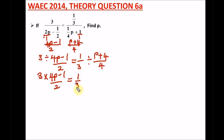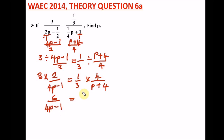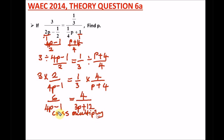We have one over three times - this comes up over 4P minus one, and this would be two. So this would be four over P plus four. What we have is six over 4P minus one, equal to four over - three will multiply P and four, giving us 3P, and three times four gives us plus twelve. So we cross multiply. This is a theory question so you have to write out your solutions.